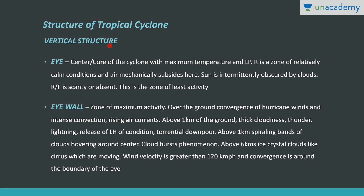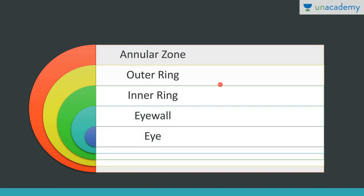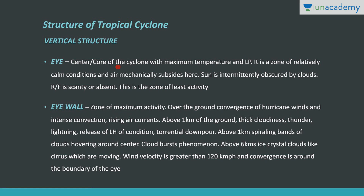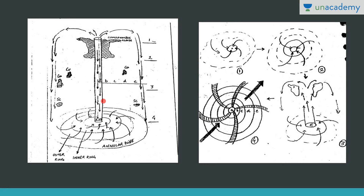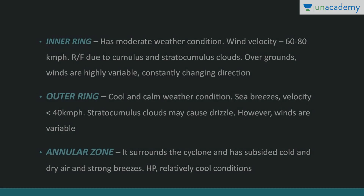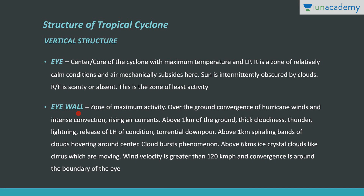The vertical structure of a cyclone consists of: at the center there is the eye, then surrounding it is the eye wall, then the inner ring, outer ring, and annular zone. The eye, or core of the cyclone, has the maximum temperature and is a zone of relatively calm conditions because the air is mechanically subsiding here. The eye wall surrounding the eye is the zone of maximum activity, where all the ground convergence of winds and intense convection takes place, with rising air currents visible in the diagram.